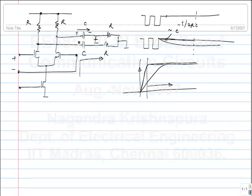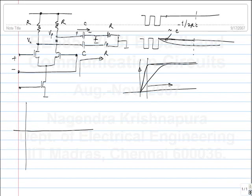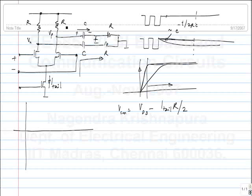Under those conditions, what will be the voltages Vp and Vn — what is the common mode value, and what is the swing of each of them? When the circuit is transmitting symbols with some transitions, the swing of Vp and Vn is I_tail·R peak to peak differentially.